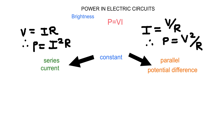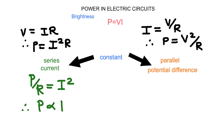We can take the formulas and isolate the constant variable. For resistors in series, isolating I and bringing P and R to the same side of the equation, we get P divided by R equals I squared. Since I squared is constant, we can deduce that P is directly proportional to R.